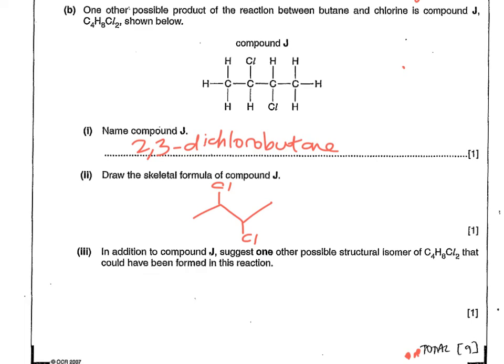So I've added the name plus the skeletal formula. And it says, in addition to compound J, suggest one of the possible structural isomer of C4H8Cl2 that could have been formed in this reaction. So let's bring the page down to allow us to do this.